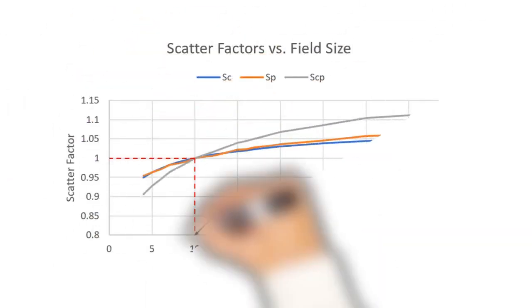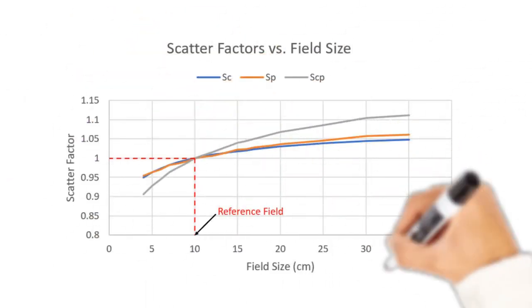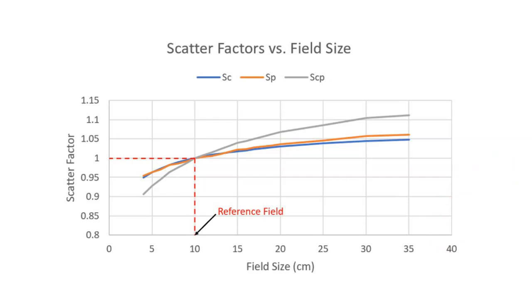This plot shows all of the scatter factors superimposed on the same graph. You can see that the field size dependence is largest for the total scatter factor because it's a product of the other two, and you can also clearly see the relative contributions from each of the individual scatter factors.